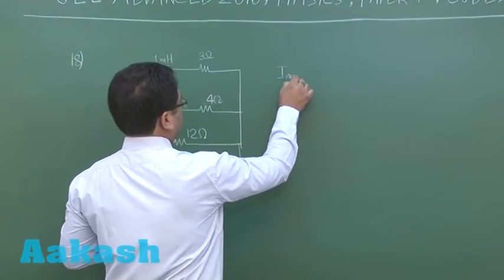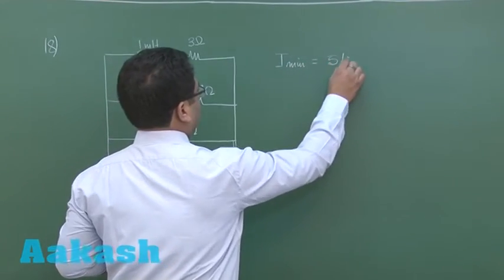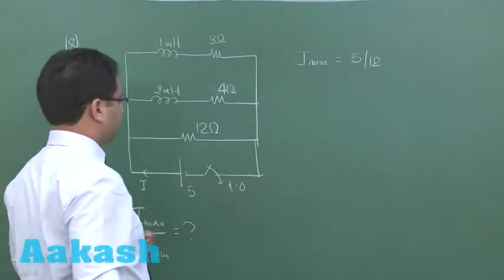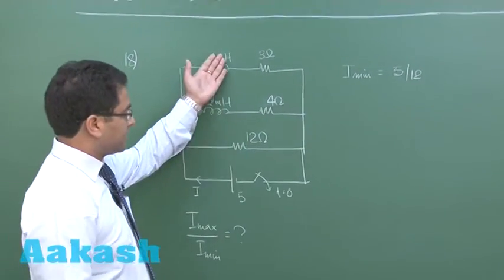I_min would be 5 by 12, that is at the initial instant when these are open circuited, only this resistance is functioning.